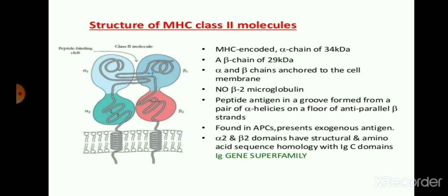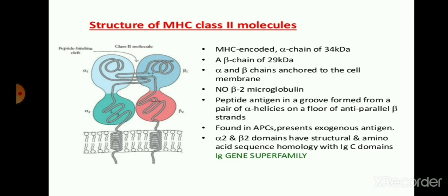The second structure is the MHC class 2 molecule. Basically, MHC class 2 molecules are encoded by the alpha chains of 34 kilodaltons and beta chain of 39 kilodaltons. The antigen peptide binding site — that is the peptide binding cleft — can be seen in this figure as alpha 1 and beta 1. This is the site where the peptide of antigen binds. Also, alpha and beta chains are anchored in the cell membrane.